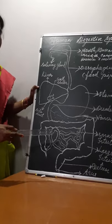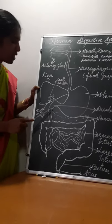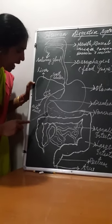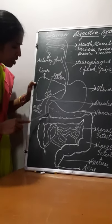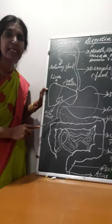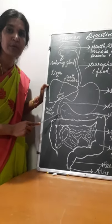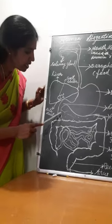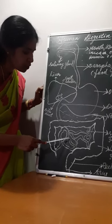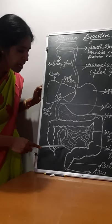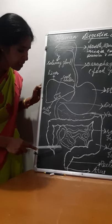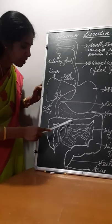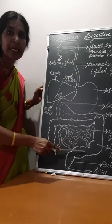The bile makes the food alkaline in nature, with a pH of more than 7, so that the pancreatic enzymes can act on the food and digest it into simpler molecules. Further, the food moves into the jejunum and ileum parts, and finally it reaches the large intestine.